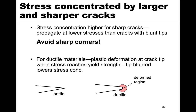Sharp corners concentrate stress and should be avoided if you want to avoid failure. In ductile materials, plastic deformation can blunt a sharp crack tip, offsetting some of the stress concentration. For brittle materials, flaws and cracks are extremely important; for ductile materials, deformation at the crack tip reduces the stress concentration factor, making it less critical — though still an issue.